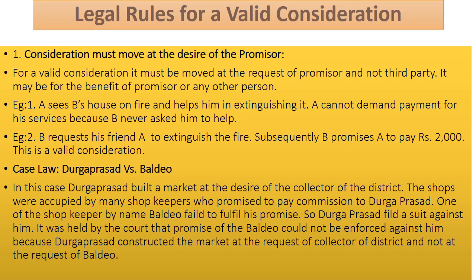It may be for the benefit of the promisor or any other person. There are two examples to understand this concept. Number one: A sees B's house on fire and helps him in extinguishing it. In this case, A cannot demand payment for his services because B never asked him to help. This act is not treated as consideration because it was not done at the request of the party. See the second example: B requests his friend A to extinguish the fire, and subsequently B promises to pay A Rs. 200. This is a valid consideration because the act was done at the request of the promisor.